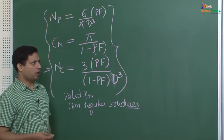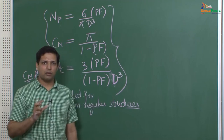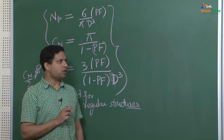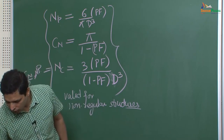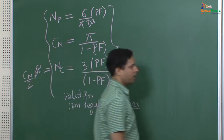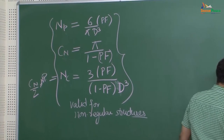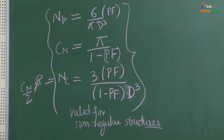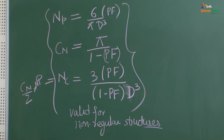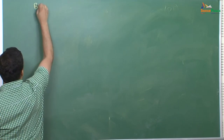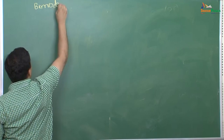Now let us get to the next step. So far we have used just mono-sized spherical particles. Next, we want to move on to bi-modal distribution of particles and see how much packing fraction we can get. Once you have obtained the packing fraction, we can obtain other important parameters like number of particles per unit volume and number of contacts per unit volume.